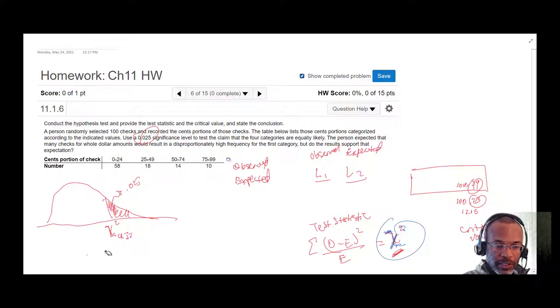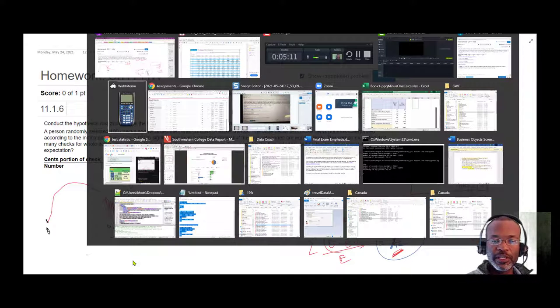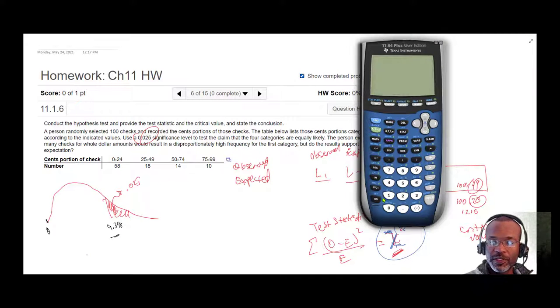So let's get rid of all of this. Our critical value is 9.348, and now we just need to figure out what our test statistic is and see if it's larger than our critical value. So what's our test statistic? We're going to use our calculator to help us generate those numbers.